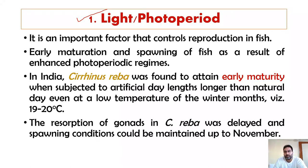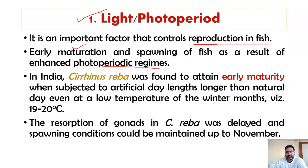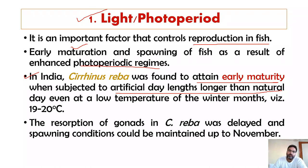Light is an important factor that controls reproduction in fish. Early maturation and spawning of fish occur as a result of enhanced photoperiodic regimes — when the days are long and the nights are shorter, this helps the fish to breed. In India, Cirrhinus reba was found to attain early maturity when subjected to artificial day lengths longer than natural day, even at low temperatures during winter months.